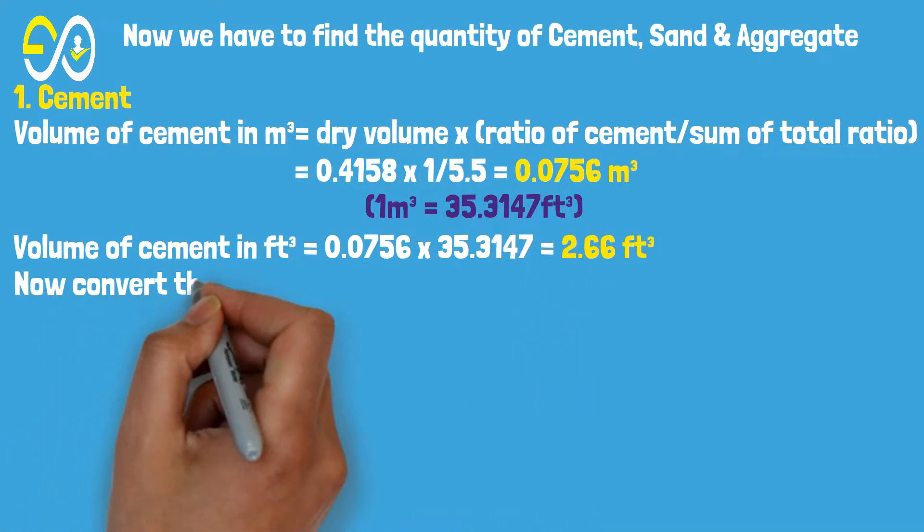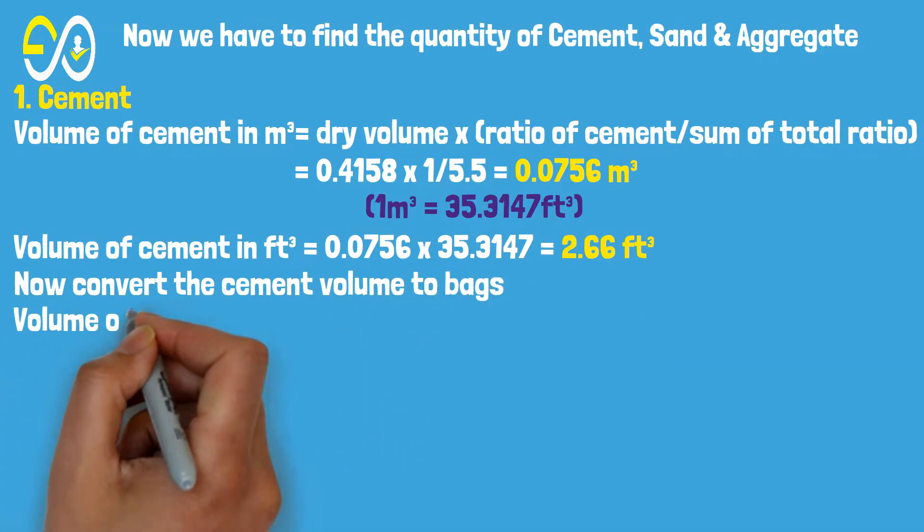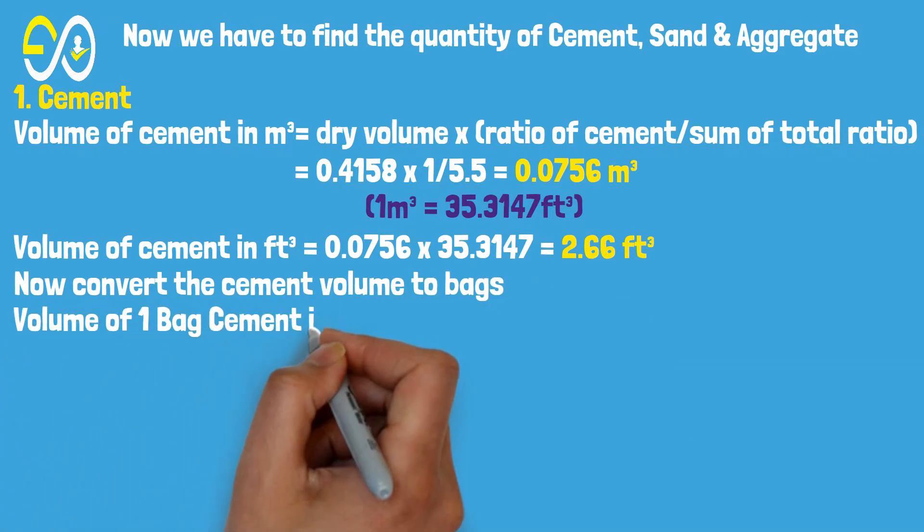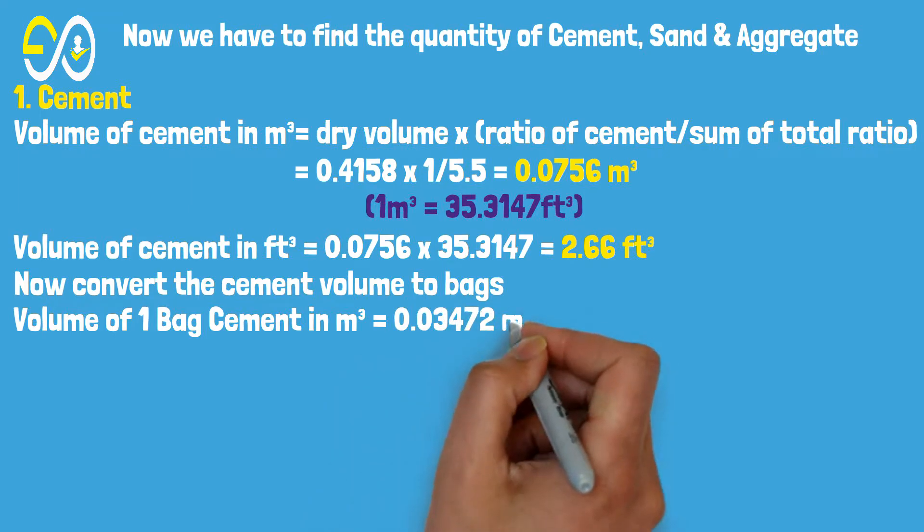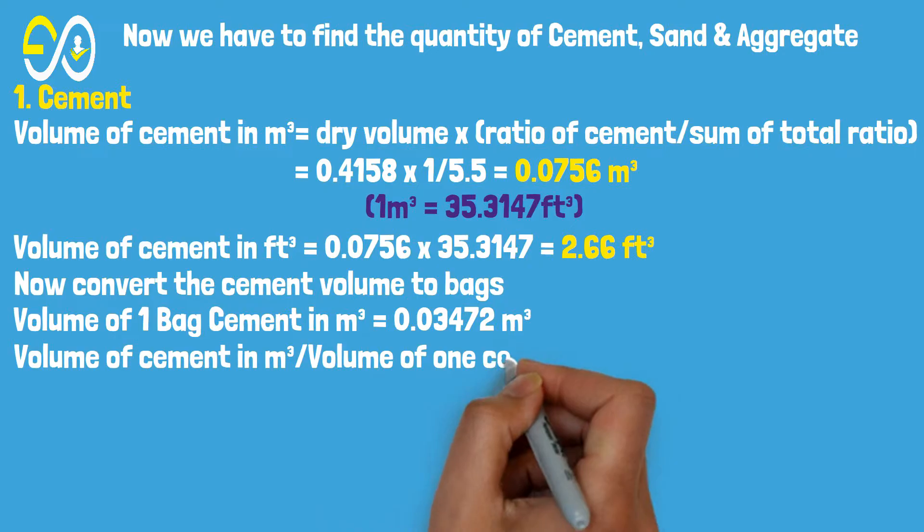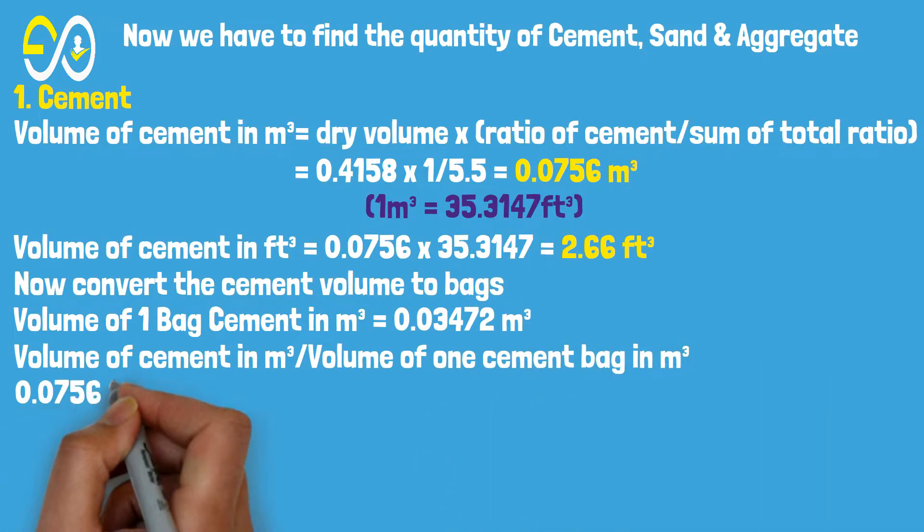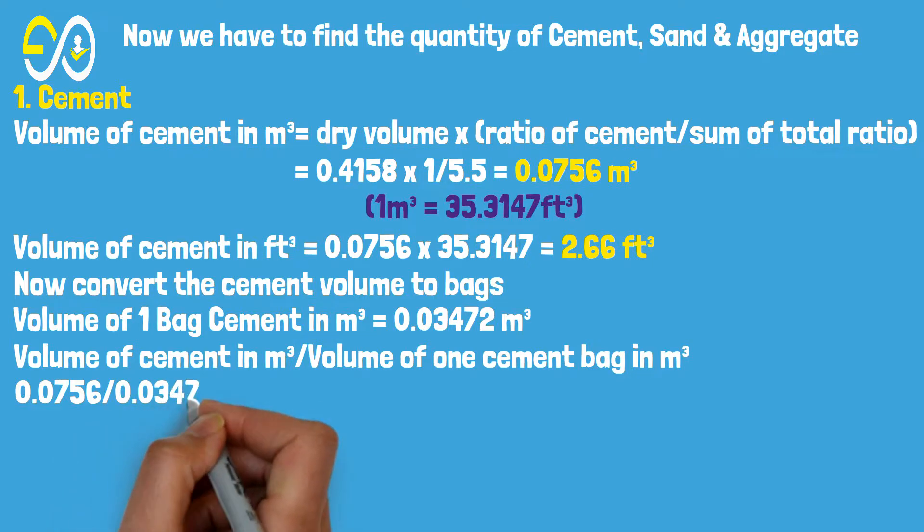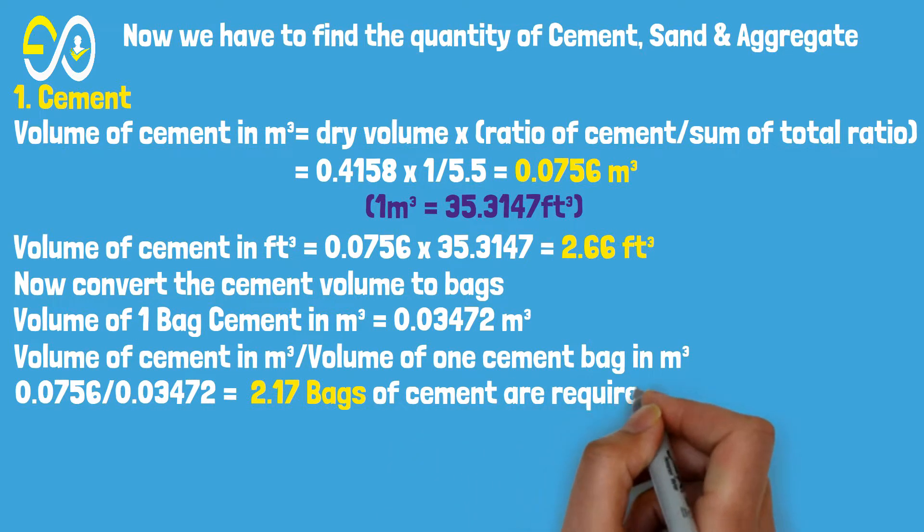Now convert the cement volume to bags. Volume of one bag cement in cubic meter equals 0.03472 cubic meters. Volume of cement in cubic meters divided by volume of one cement bag: 0.0756 divided by 0.03472 equals 2.17 bags of cement required for the above column.